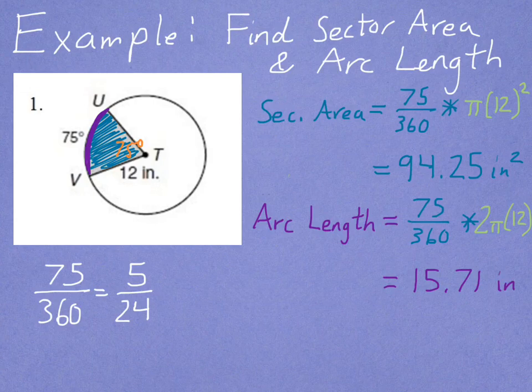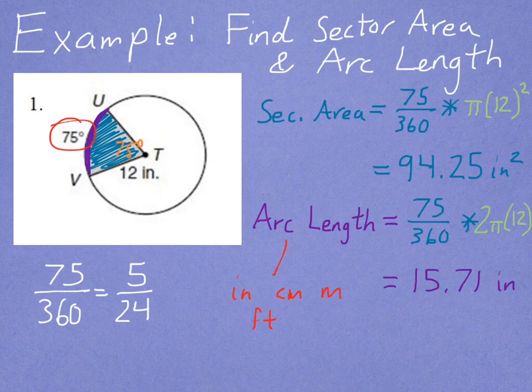Before I go, let me point out a common mistake. Sometimes people see 75 written on the arc and assume that must be the arc length. The unfortunate thing is, a degree is not a measure of length — a degree is a measure of rotation. Arc length is given in units such as inches, centimeters, meters, or feet. It is never given in degrees. Hope that all makes sense, and I'll see you guys in class.